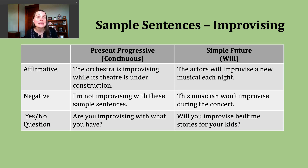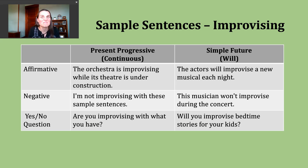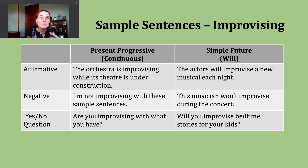Now let's look at making a yes or no question in the present progressive. To do this, I start with a present form of be — am, is, or are — then my subject, and my form of be has to match my subject, then the -ing form of the verb. Here is my last present progressive example: Are you improvising with what you have? Sometimes this might mean making something up from other things that are around when you don't have exactly what you need.